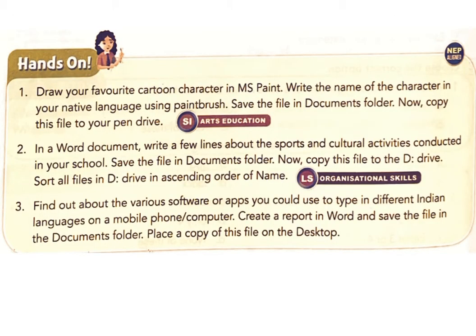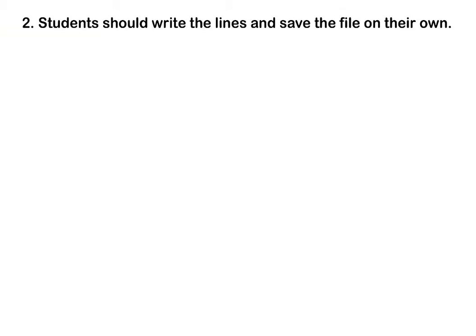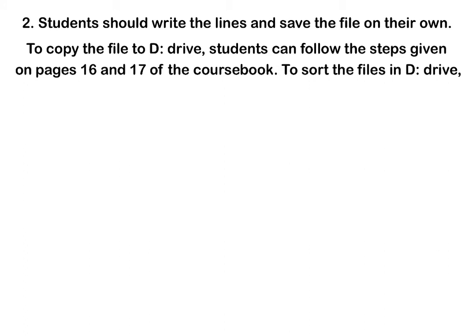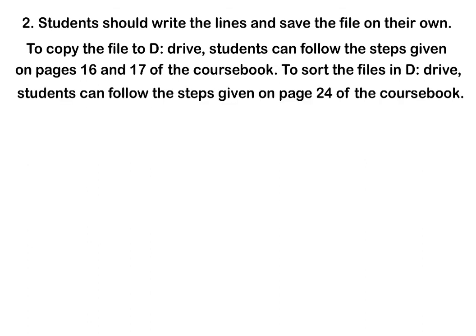Hands-on activity 2: In a Word document, write a few lines about the sports and cultural activities conducted in your school. Save the file in the Documents folder, copy it to the D drive, and sort all files in the D drive in ascending order by name. Answer: Students should write the lines and save the file on their own. To copy the file to D drive, follow pages 16-17 of the course book. To sort files, follow page 24.